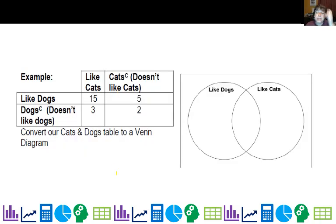So let's look at this example and figure out how do we create this Venn diagram from this table. Well, we have 15 like cats and dogs, so that has to go in the overlap. Then we have two that don't like cats or dogs, so that goes outside. Then we have the five that like dogs but not cats, so they have to be in the dog circle but not the cat circle. And then finally we have the three that like the cats but not the dogs. And that's how you create a Venn diagram.